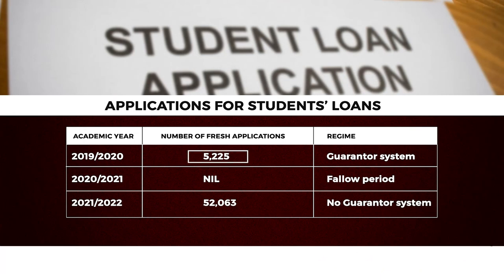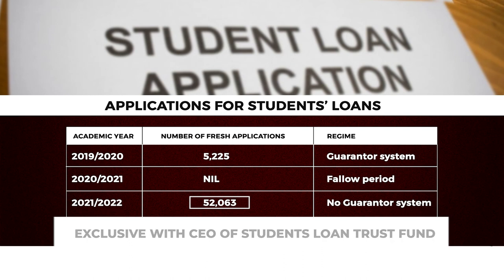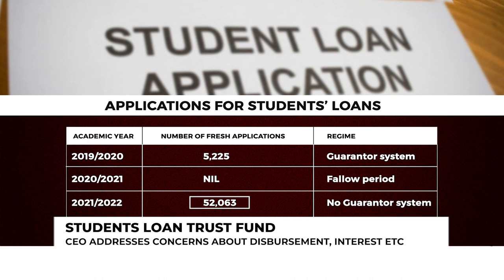Before the no-guarantor policy, in the 2019 to 2020 academic year, we had about 5,285 applications. When the no-guarantor policy was introduced, we recorded a jump to about 52,063 applications. That tells you people really wanted this support, but the guarantor system prevented many from having access to the process. As the days go by, applications keep increasing, and when they come in, they are verified and move to the point of disbursement.